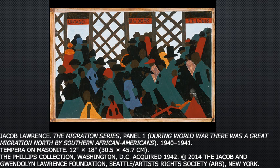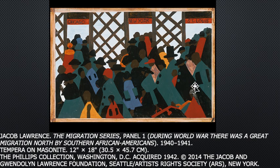This is Jacob Lawrence's Migration Series, panel one. During World War II there was a great migration north by southern African Americans. He did a whole series illustrating this movement in both positive and negative aspects. Panel one shows gateways to three cities with a mob of people filtering through to go north — the departure from the southern communities. Very simplified shapes, everybody in silhouette, with a very limited color palette: one green that repeats, a light blue, a red. Narrowing the palette gives it a sense of unity.